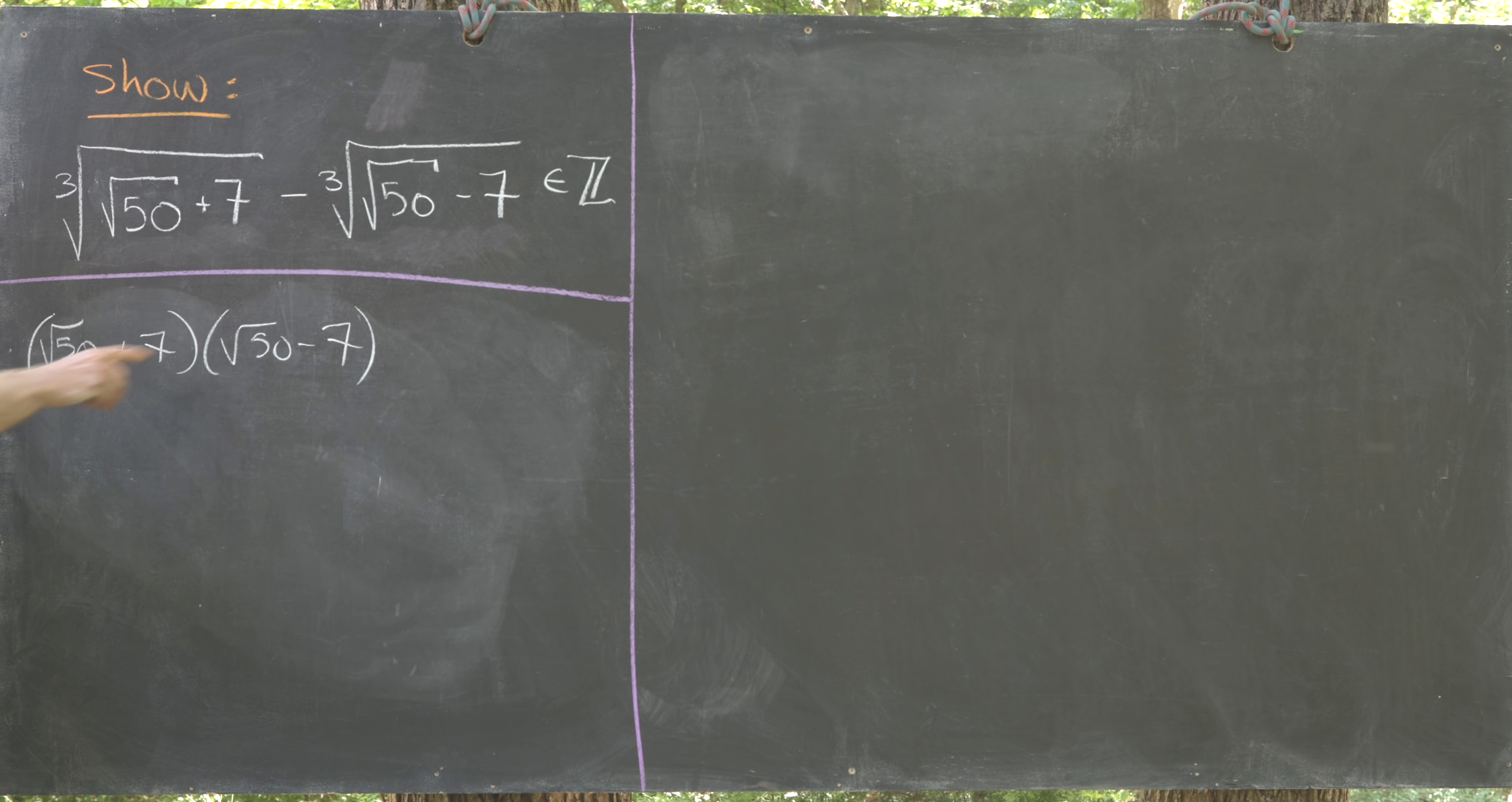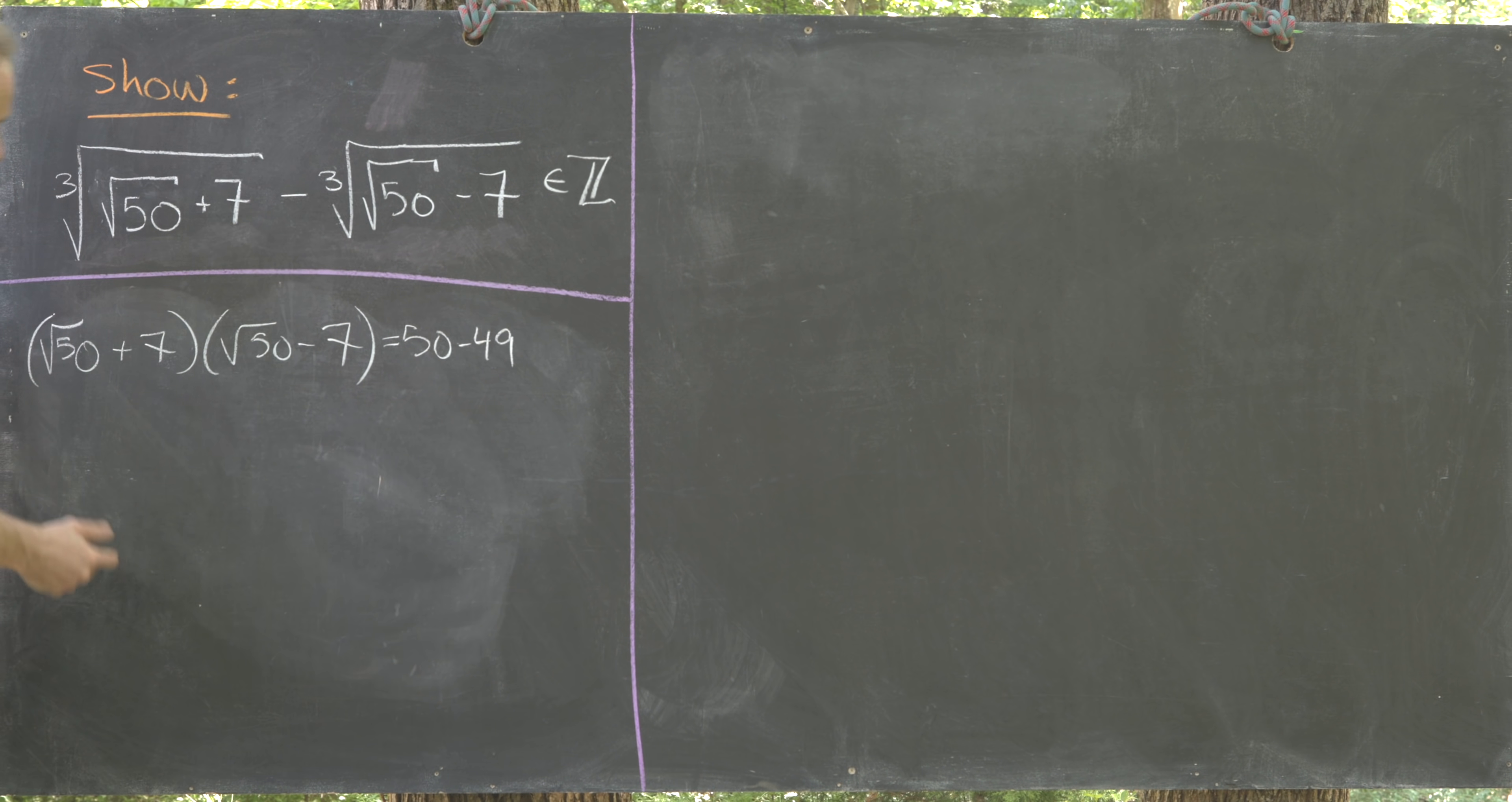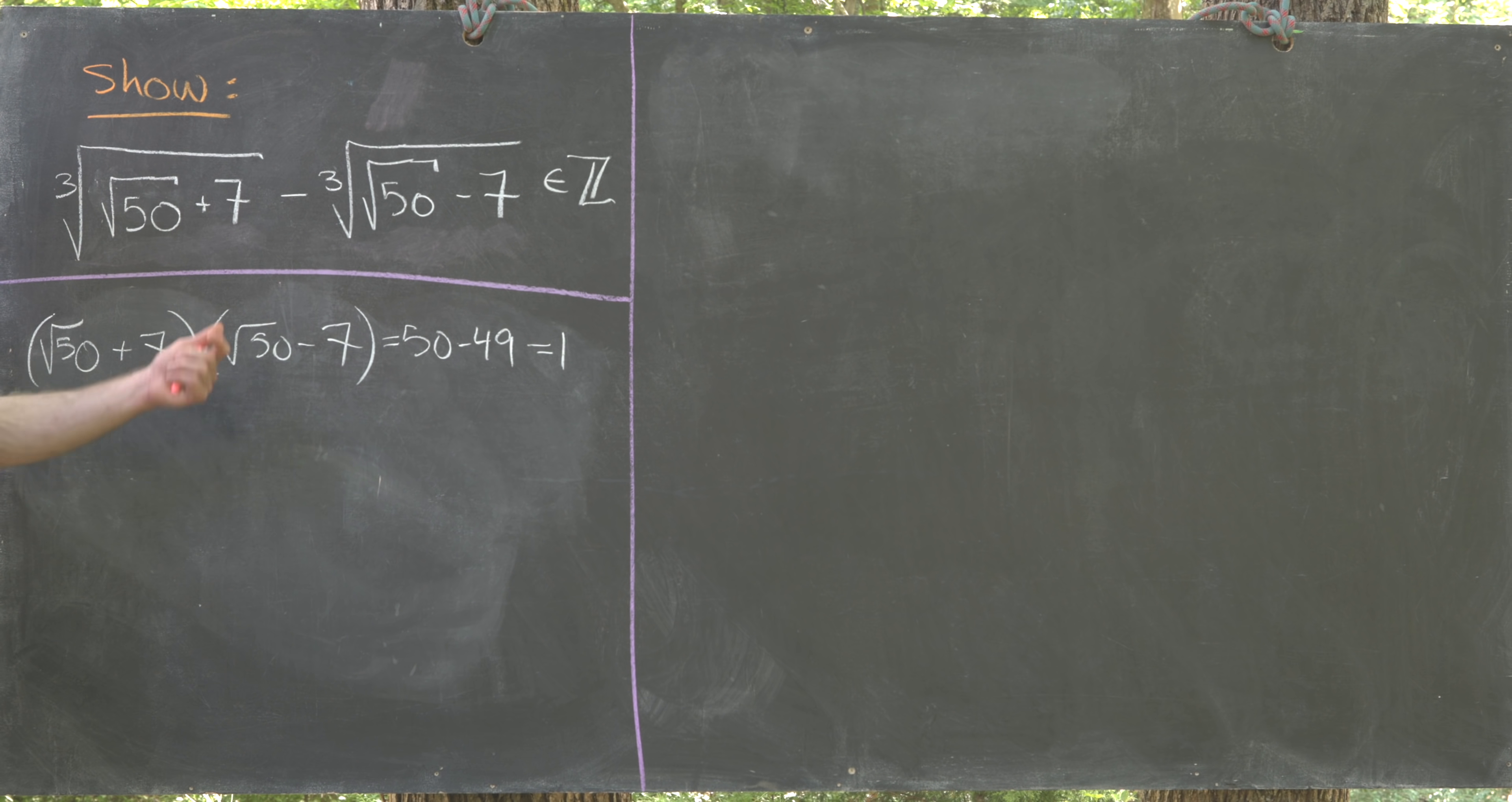Well that's exactly the factorization for a difference of squares. That'll give us 50 minus 49, given that the square root of 50 squared is 50 and 7 times 7 is 49, so that's going to give us 1. That's pretty nice to see.